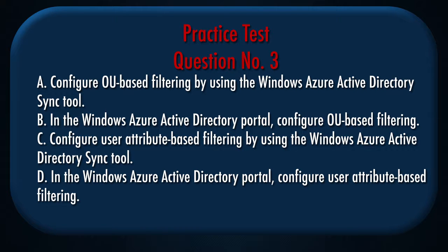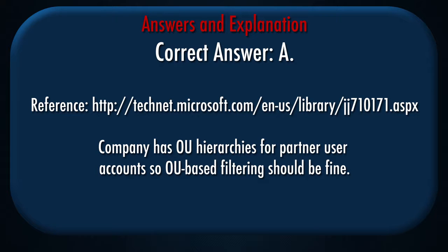A. Configure OU-based filtering by using the Windows Azure Active Directory Sync tool. B. In the Windows Azure Active Directory portal, configure OU-based filtering. C. Configure user attribute-based filtering by using the Windows Azure Active Directory Sync tool. D. In the Windows Azure Active Directory portal, configure user attribute-based filtering. Correct answer: A. Explanation: The company has OU hierarchies for partner user accounts, so OU-based filtering should be fine.